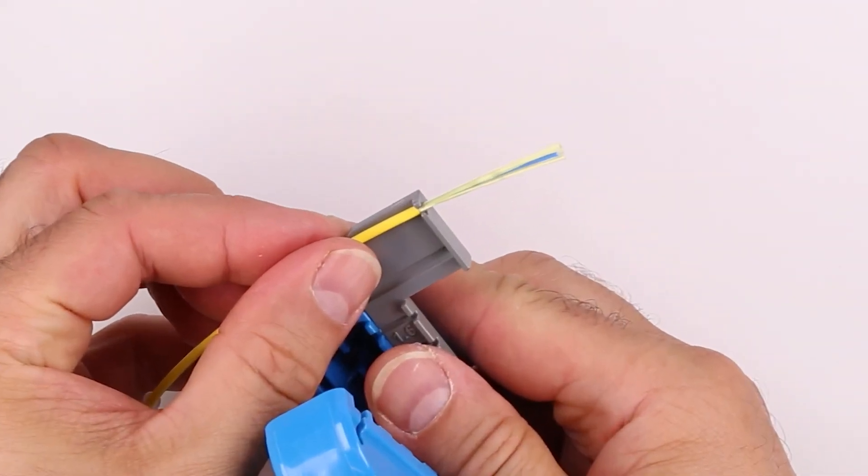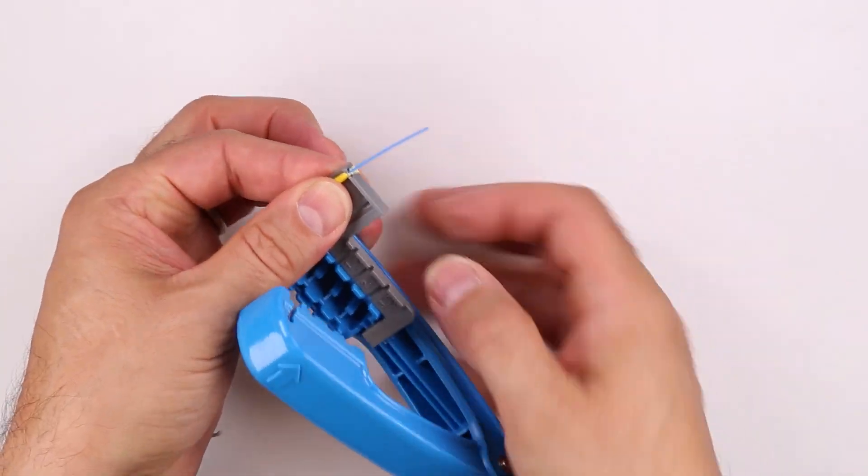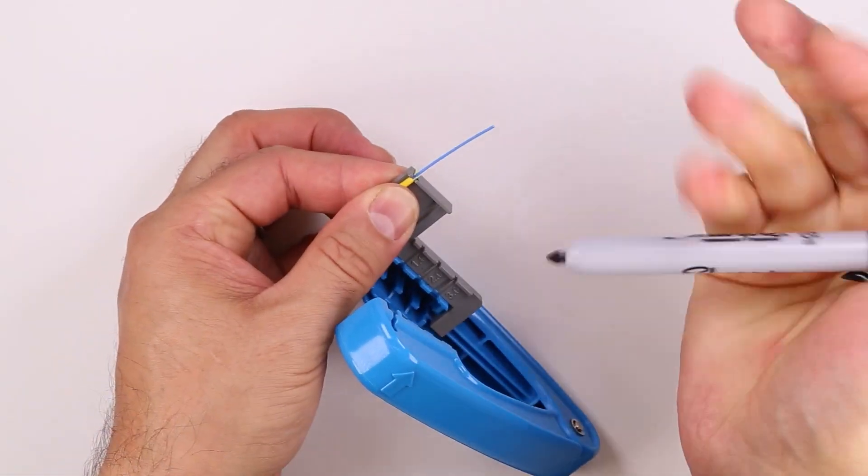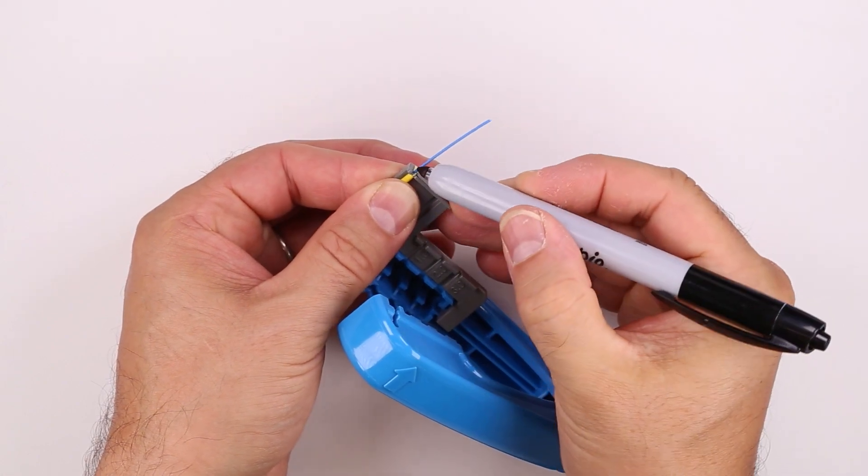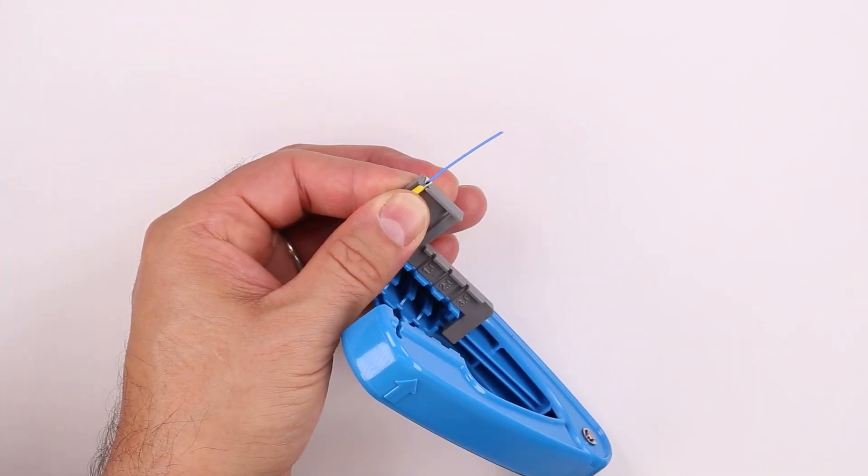Place the cable in the notch at the end of the cord tool with the jacket against the stop. Wrap the aramid behind the tool and hold it in place. Mark the buffer as it exits the right side of the stop.